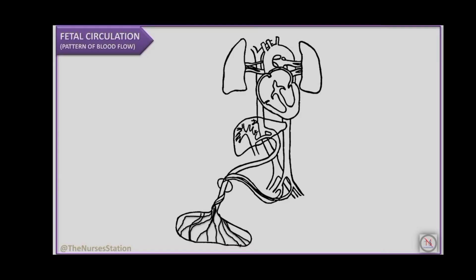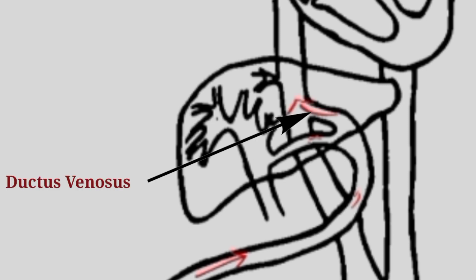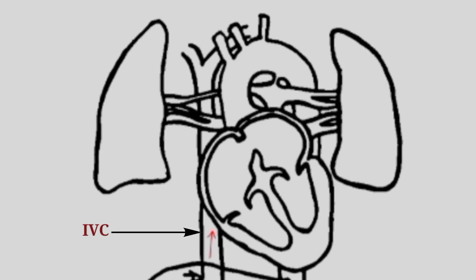Lastly, there are two umbilical arteries which take deoxygenated blood from the fetus to the placenta. In fetal circulation, the placenta accepts blood without oxygen from the fetus. As blood passes through the placenta it picks up oxygen and becomes oxygenated. This oxygen-rich blood returns to the fetus via the umbilical vein, which delivers some to the liver. Most is shunted through the ductus venosus into the inferior vena cava, which flows into the right atrium of the fetal heart.